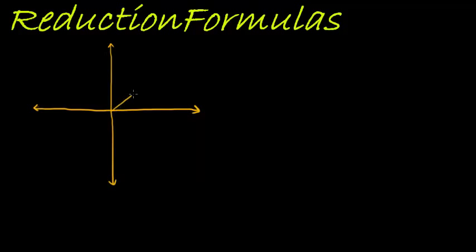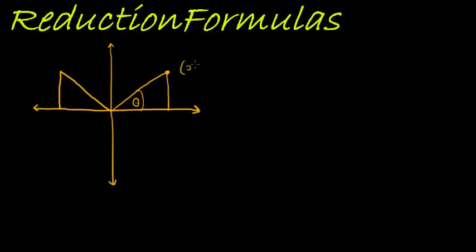Let me show you this triangle. This is the basic triangle in the first quadrant, and that is theta. Now, whenever we make a triangle in another quadrant, let's say we have a triangle there, and let's say this is the point x, y, and that is also the point x, y, but with one difference. The x values are the same — this x and that x have the same absolute value, but they are different in their signs: this is positive and this one is a negative value. What that simply means is that these two triangles are going to look exactly the same — they are going to be what we call congruent triangles.